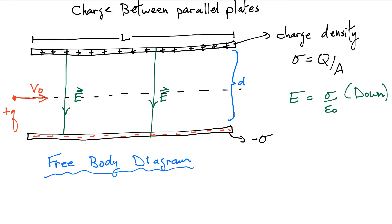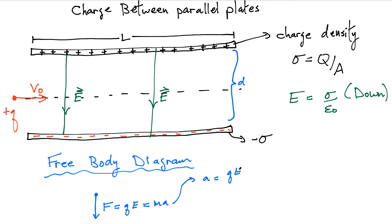Here's our problem: we have our charge moving into the region where the field is. The first thing to do is consider a free body diagram to analyze the motion. There's only a single force acting on it — the electric force — and its magnitude is simply Q times the electric field. Since there's only one force, Newton's second law says the sum of forces equals MA, giving us an expression for acceleration: QE divided by the mass of the particle. This is a constant acceleration.